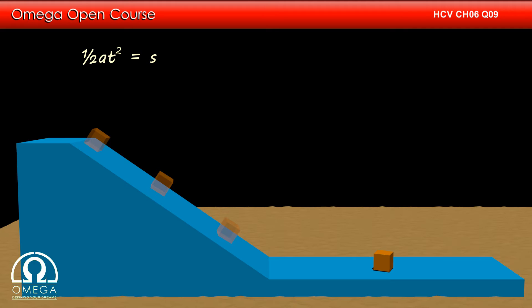As per the question, the block travels half meter in first half second, therefore half into a into 1 by 4 is equal to 1 by 2. Simplifying, we get a is equal to 4 meter per second square.